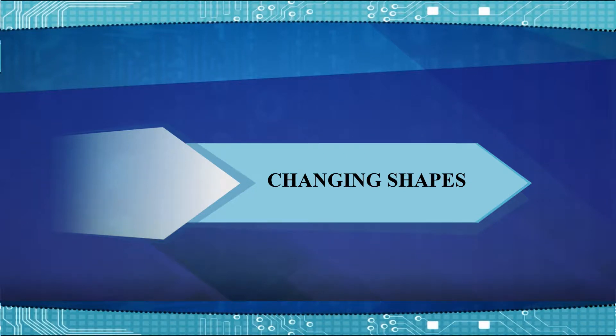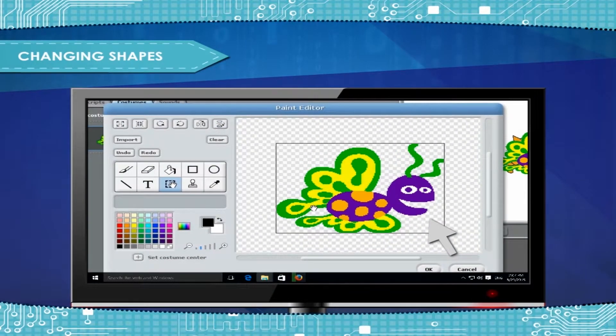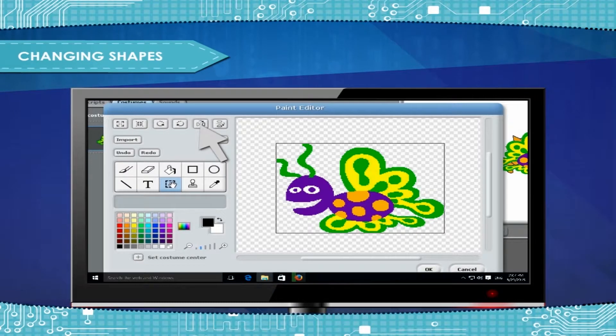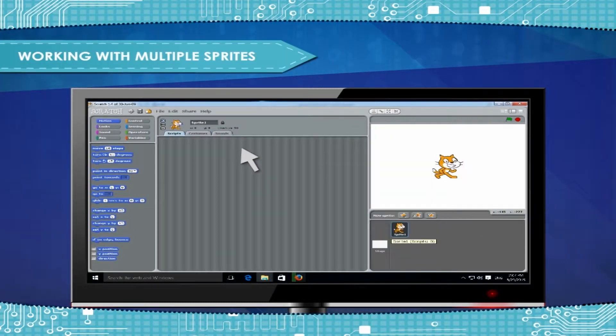Changing shapes: You can increase or decrease the size of an image by clicking the Grow and Shrink buttons respectively. Similarly, you can flip the shape by using its concerned buttons. Working with multiple sprites.